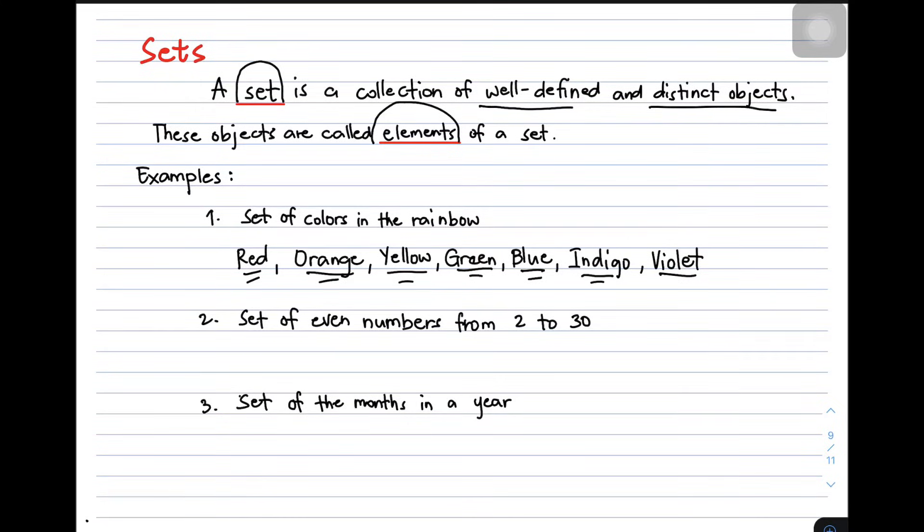In other words, the elements of the set of colors in the rainbow are red, orange, yellow, green, blue, indigo, and violet. Okay?